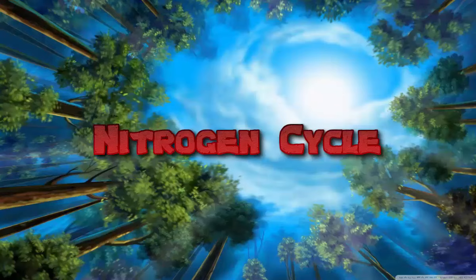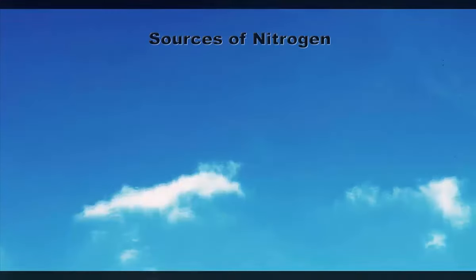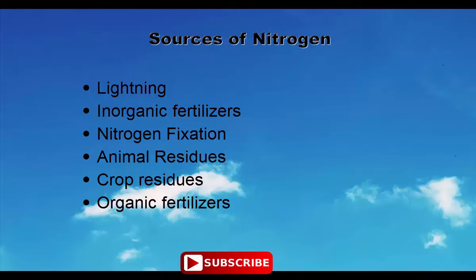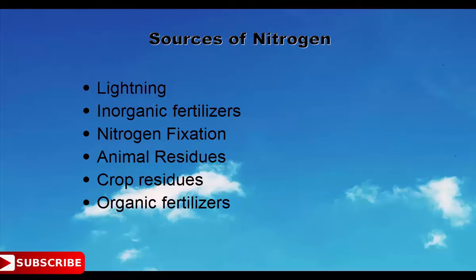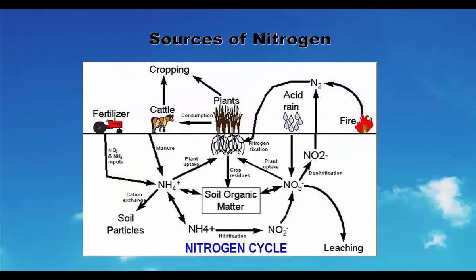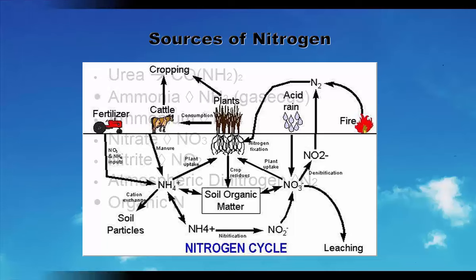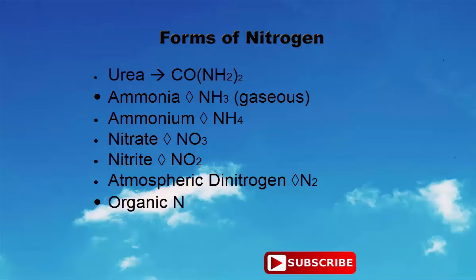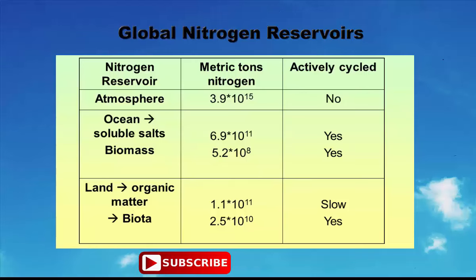Nitrogen cycle sources of nitrogen: lightning, inorganic fertilizers, nitrogen fixation, animal residues, crop residues, and organic fertilizers. See the diagram to understand the whole nitrogen cycle. Forms of nitrogen include urea, ammonia, ammonium, nitrate, nitrite, atmospheric dinitrogen, and organic forms. Global nitrogen reservoirs are the atmosphere, ocean, and land.